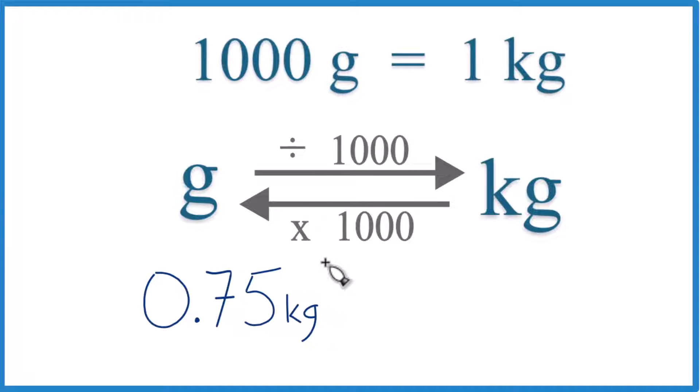OK, let's convert 0.75 kilograms to grams. Here's how you do it.